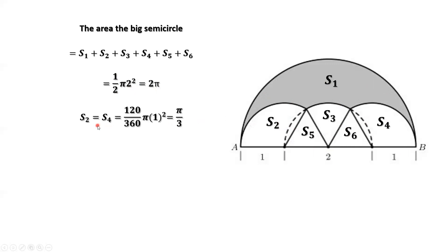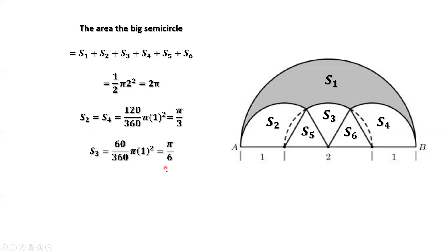The area of S2 and S4 are the same by symmetry. This sector angle equals 120. The whole angle for a circle is 360, so the sector area is 120 divided by 360 times π times r squared, giving π over 3. So π over 3 is the answer for the areas of S2 and S4. Now S3 equals 60 divided by 360 times the area of the little circle, π r squared, which is π over 6. So S3 equals π over 6.